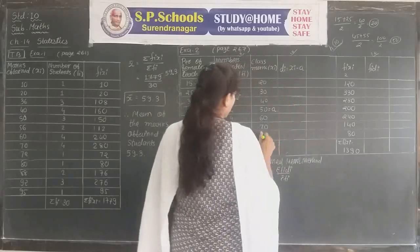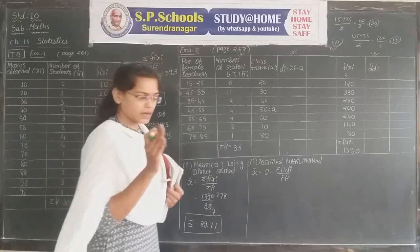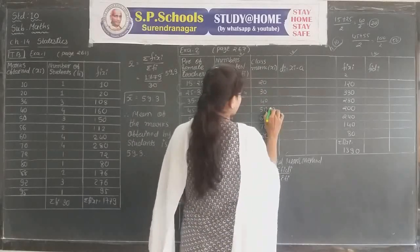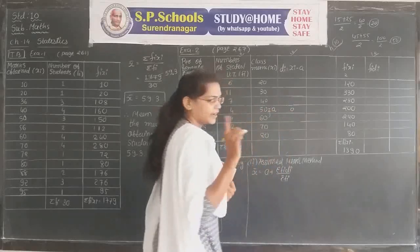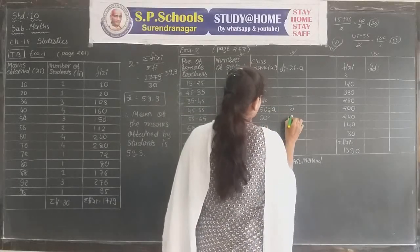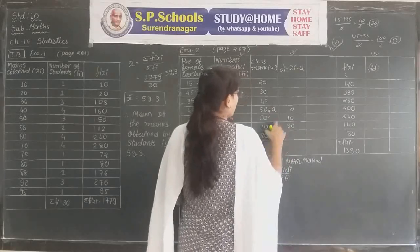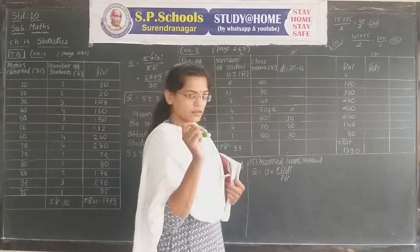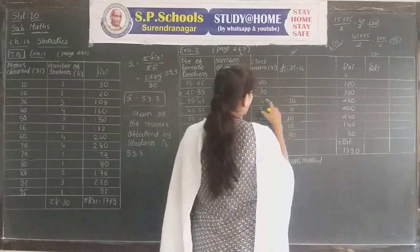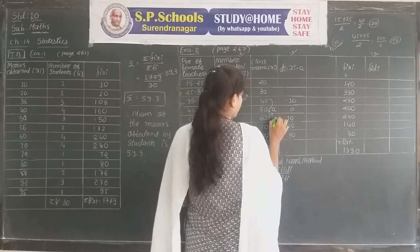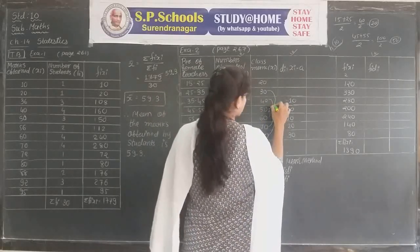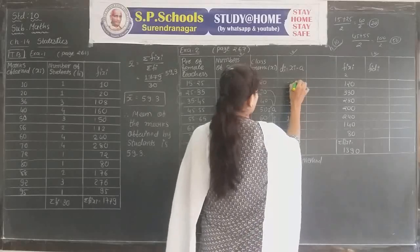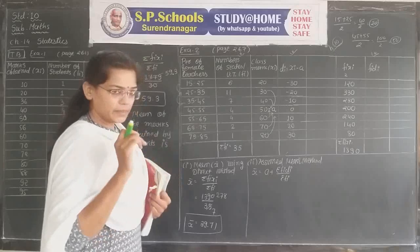To find di, subtract a from xi. In front of a, di is always 0. Going upward: 60 − 50 = 10, 70 − 50 = 20, 80 − 50 = 30. Going downward (negative): 40 − 50 = −10, 30 − 50 = −20, 20 − 50 = −30. The gap between consecutive di values equals the class size h. Values above a are positive, below are negative.